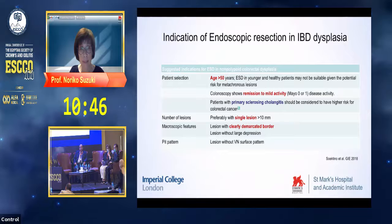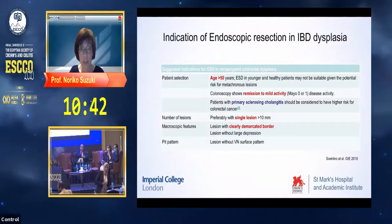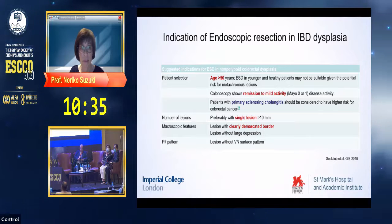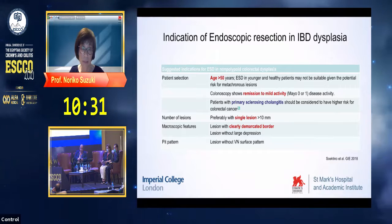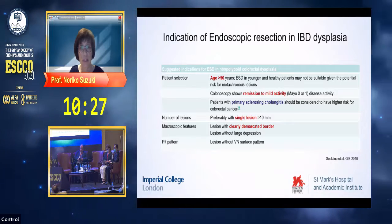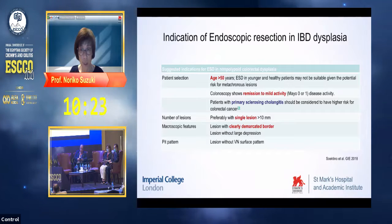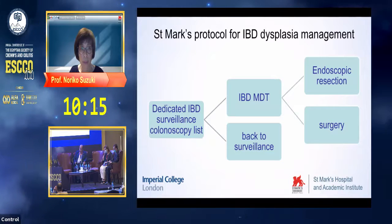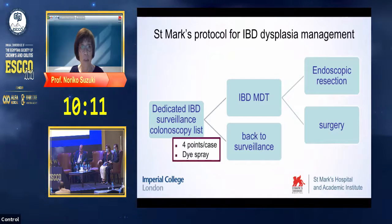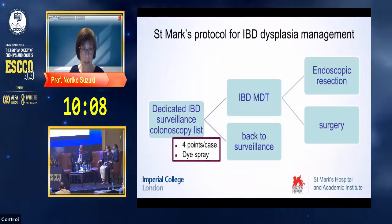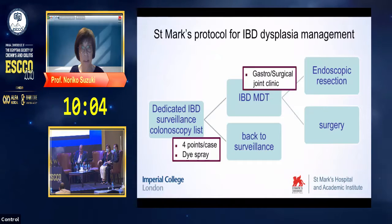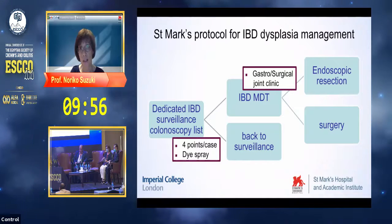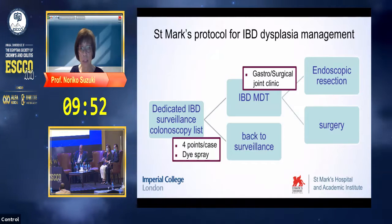If you are going to consider endoscopic resection, the bowel has to be in remission or up to mild activity, and preferably only a single region. The region has to have a clear demarcation border without any suspicious feature. There are a lot of elements to consider before thinking about endoscopic resection. Here at St. Marks, we normally do dedicated IBD surveillance, and if dysplasia is found, the case is discussed in IBD MDT — multidisciplinary approach — then we decide the most appropriate treatment.